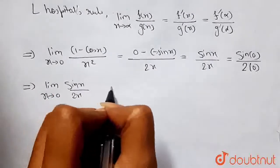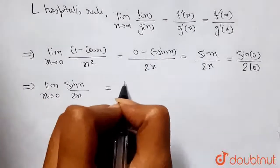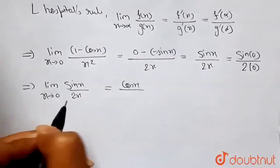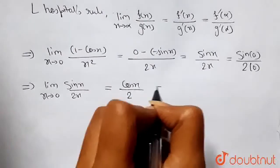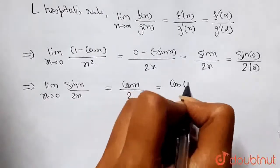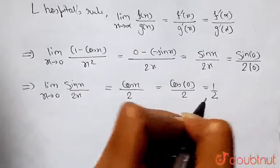Now, the differentiation of sin x will be cos x, divided by 2, the differentiation of 2x will be 2. Putting x equal to 0, it will be equal to cos(0) divided by 2, that is equal to 1/2.